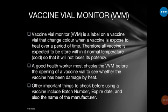Once the VVM turns color, automatically that vaccine is damaged and you must discard it. A health worker must check the VVM before opening a vaccine vial to see whether the vaccine has been damaged by heat. Before administering any vaccine, you must check the VVM to know if it is in stage one, two, three, or four.